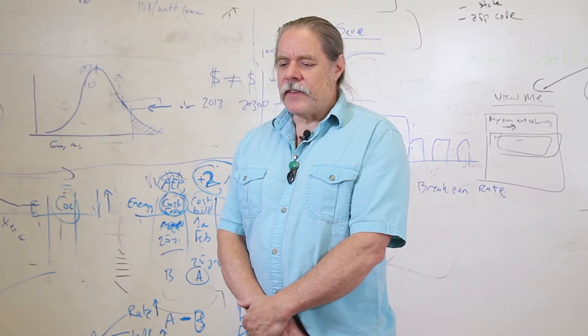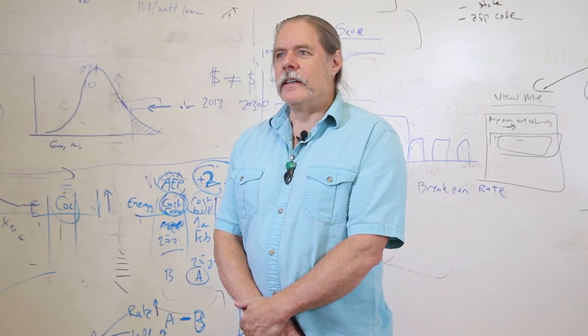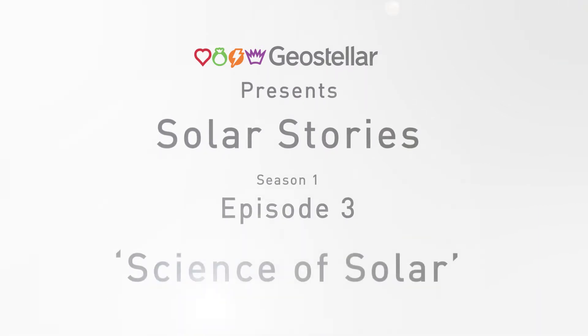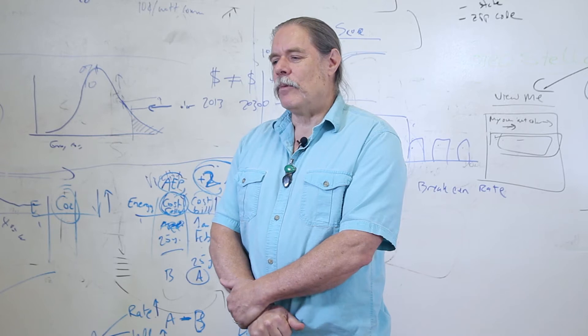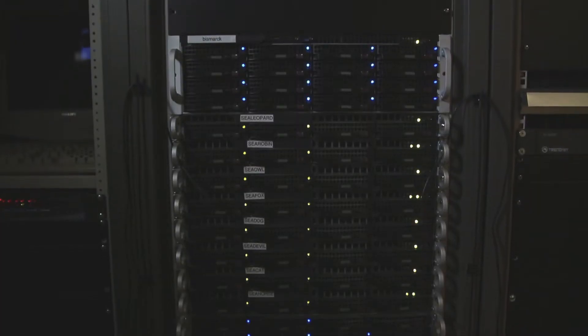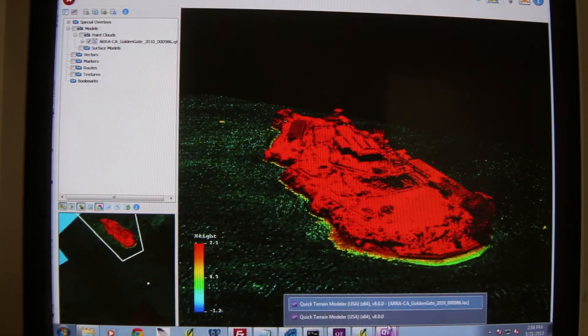I'm Brighton Daub, Chief Technical Officer here at Geostellar. We get data from many sources. We bring in the surface elevation data — all of this is remotely done. We have satellite data for how much sun is falling on a spot that might not be shaded.